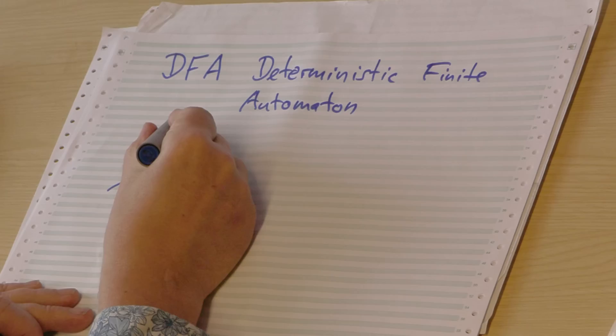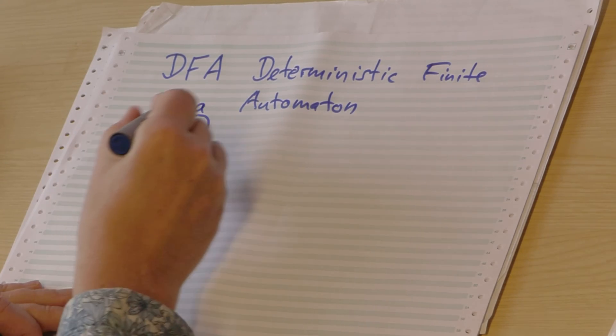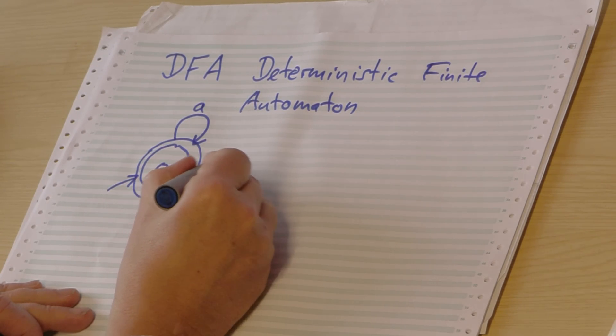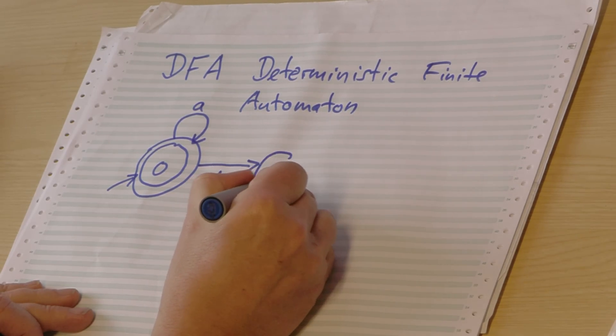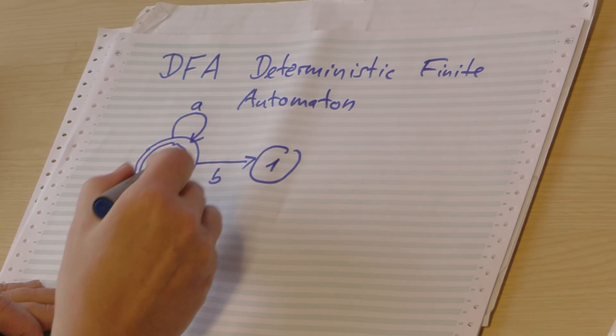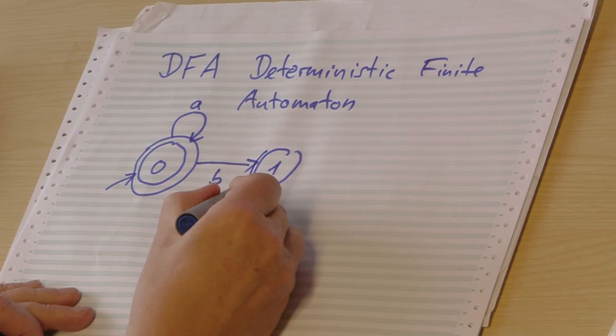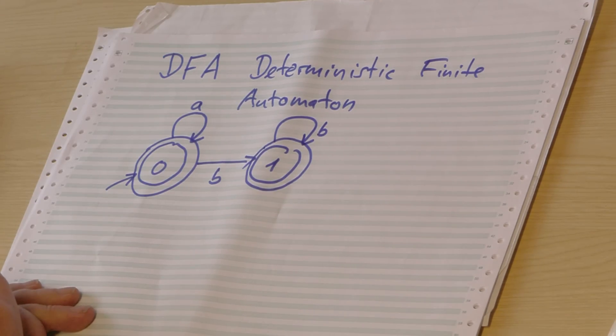Now if we see an a, we stay in this state, because we have just seen a's. If we see a b, we go into a new state, one, which also is a final state. We have seen some a's and one b. So let me make this a final state. I may have seen more b's - that's fine, I stay in this state.